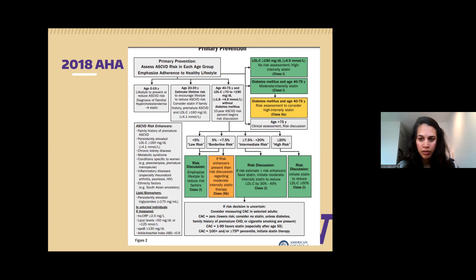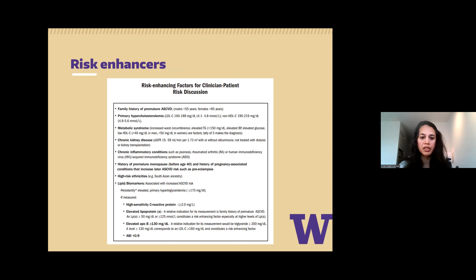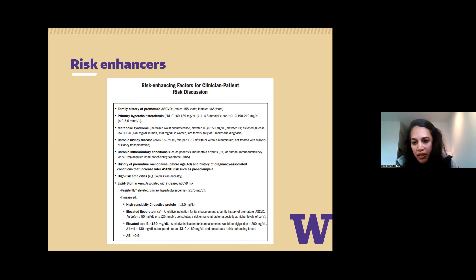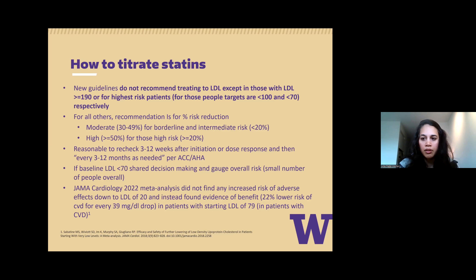The risk enhancers include some lab markers, ethnicity such as South Asian ancestry, family history, and level of lipid elevation. The ones I actually order are Lp(a) and ApoB. I've never really ordered high-sensitivity CRP, and for ABI — if they have peripheral arterial disease you'd usually already know that. This is a big paradigm change: I used to think for primary prevention just titrate to get LDL below 100, and for secondary prevention as low as possible, at least less than 70.